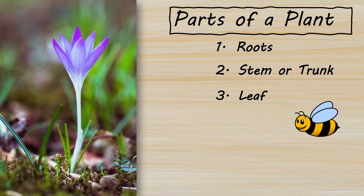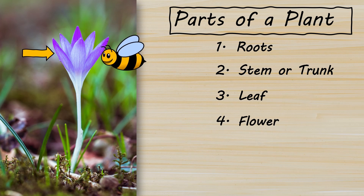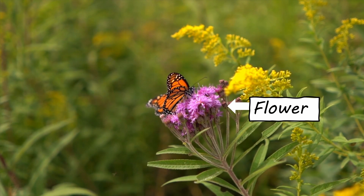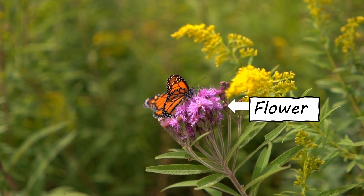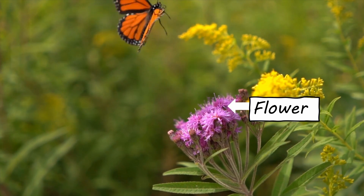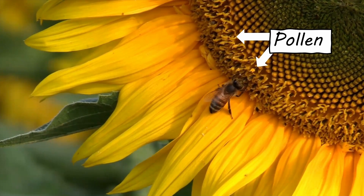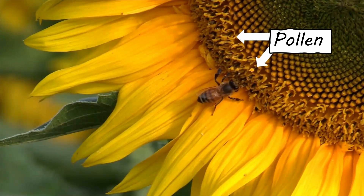Some plants have flowers. Flowers help plants to reproduce and make more of themselves. They come in many shapes, sizes, and colors, and they're really good at catching the attention of bees, butterflies, and other insects. Because flowers have an important job: to make seeds. When insects visit the flowers, they pollinate the flowers. To pollinate is to transfer pollen from one flower to another. This process helps the flowers make new seeds, which can grow into new plants.